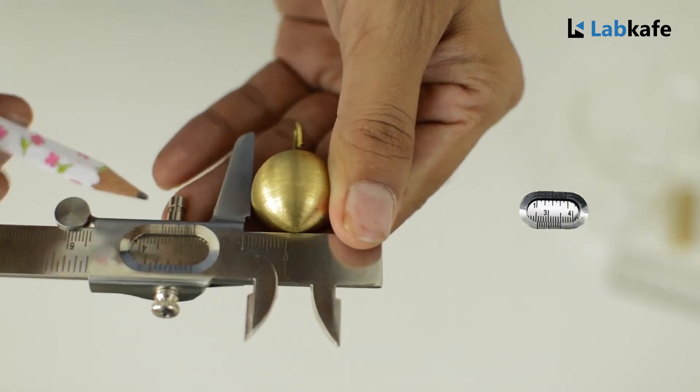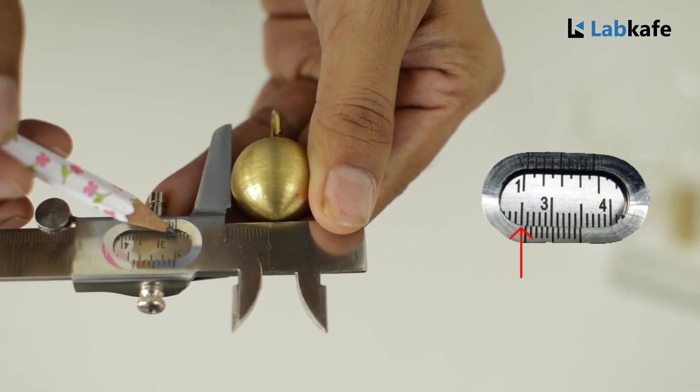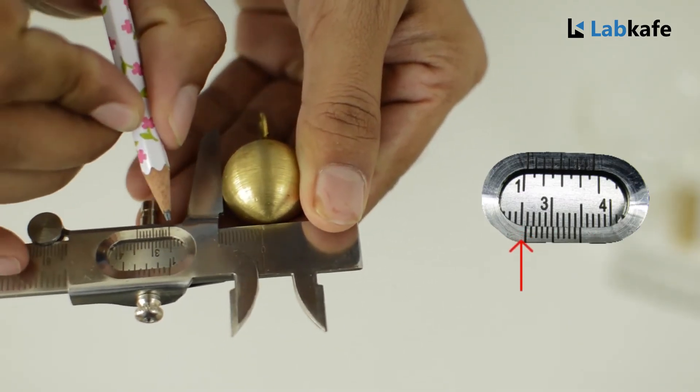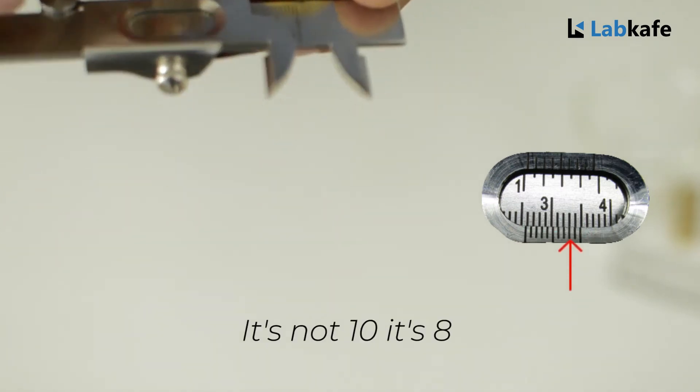As we can see, the main scale reading is 2.5 and the vernier scale is coinciding with the main scale at the 10th division. So we have 2.5 main scale division and 10 vernier scale divisions.